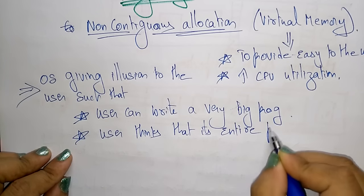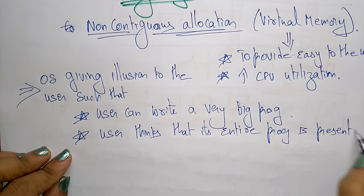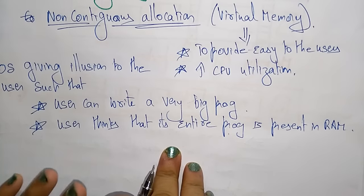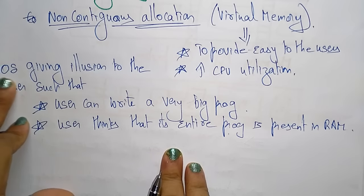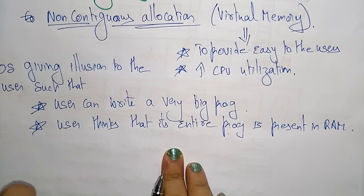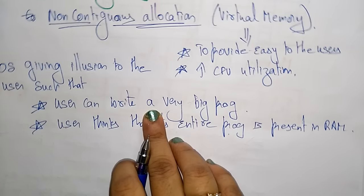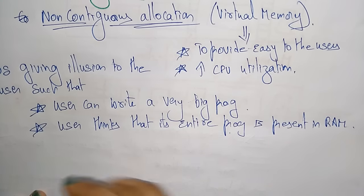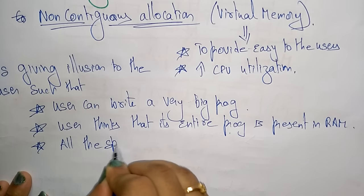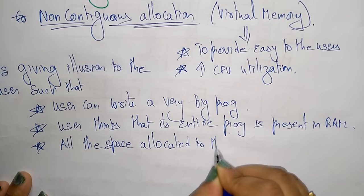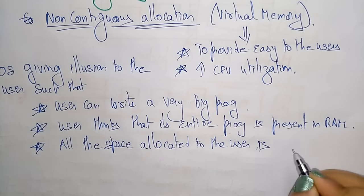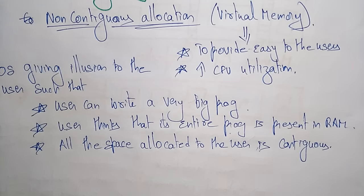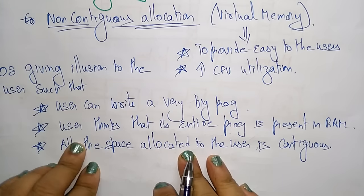The user thinks that their entire program is present in RAM. That is the virtual concept — virtual memory which is a non-contiguous allocation. The operating system gives illusion so the user can create a very big program, and the user thinks all the space allocated is contiguous, with user address starting from all zeroes.